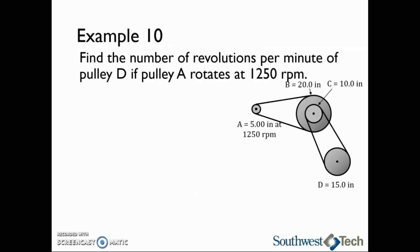Let's look at an example of a pulley calculation. Find the number of revolutions per minute of pulley D if pulley A rotates at 1250 RPM. In this picture, we see that we have two separate belts, and that means that there are two driver pulleys and two driven pulleys.